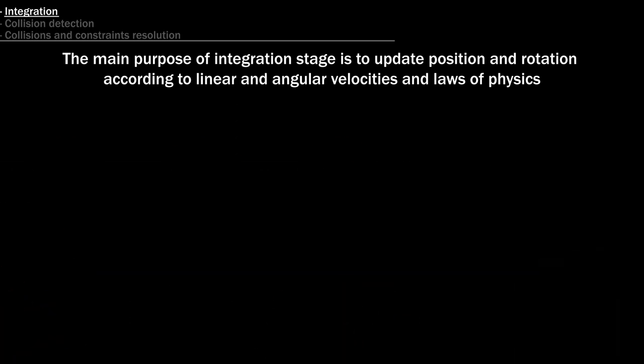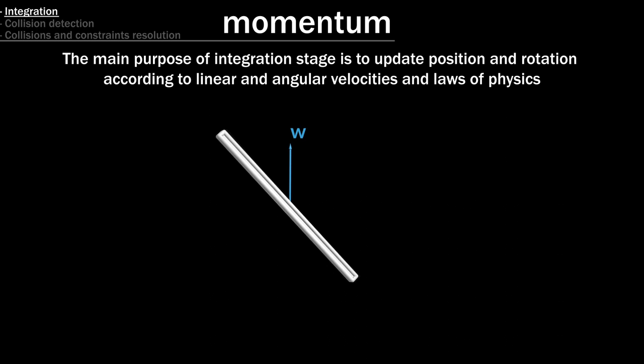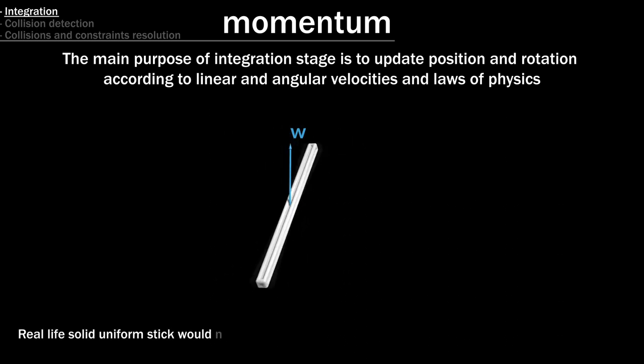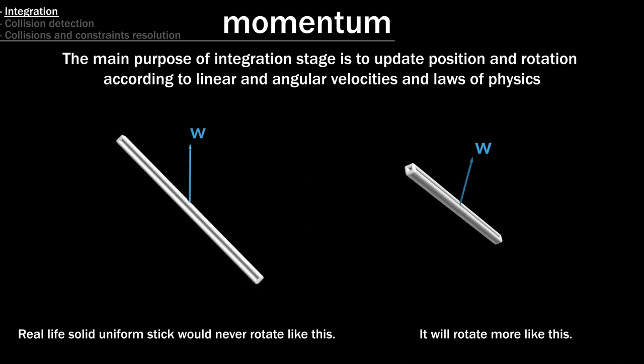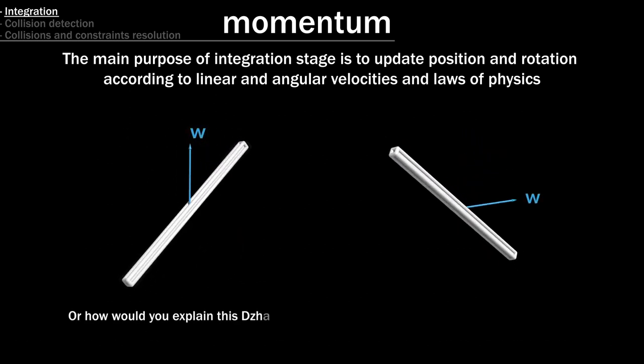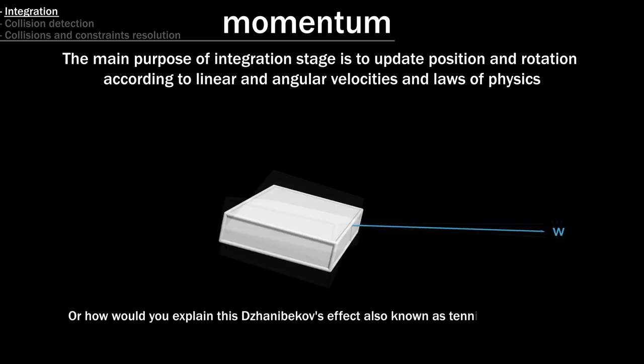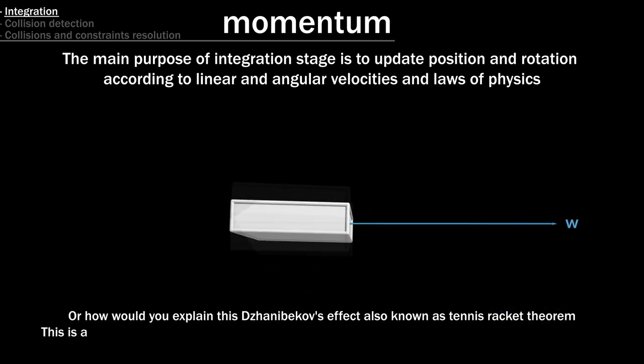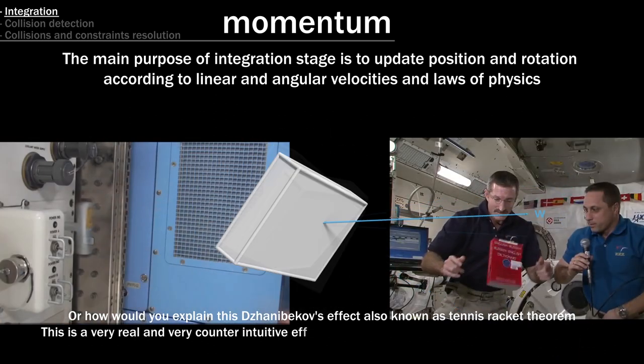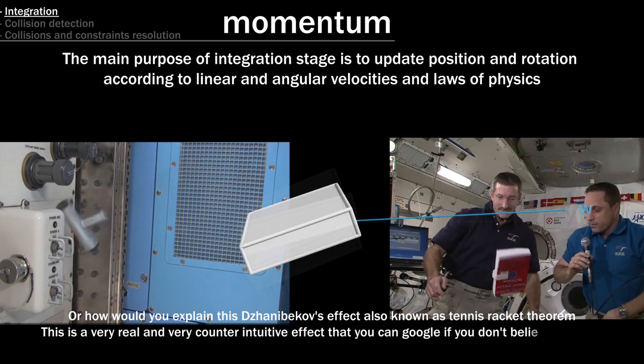No, it is not. Got you there, fellow human. First law applies to linear motion of material points. Real life solid uniform stick would never rotate like this. It will rotate more like this. Or how would you explain this Jenebekov's effect, also known as tennis racket theorem? This is a very real and very counterintuitive effect that you can google if you don't believe my word.